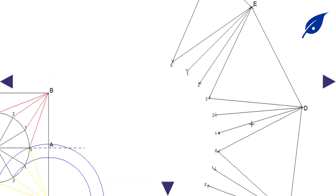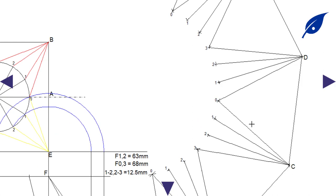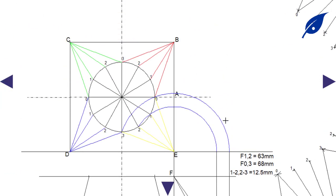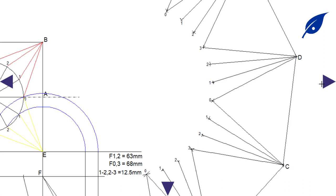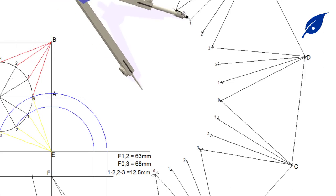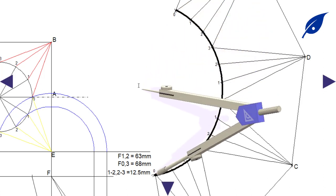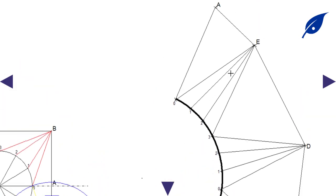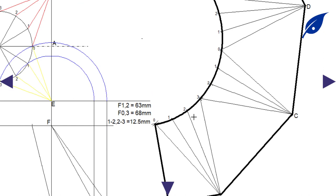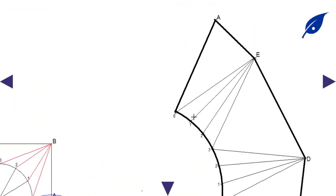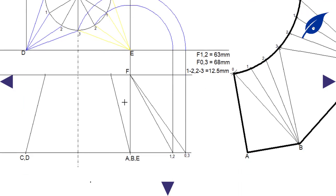We repeat the same process to get all remaining required points for the development. The last point for o at side a is obtained the same way we started. Notice that the arc obtained across the development forms a circle, so we find a midpoint and use a compass — not a French curve — to draw a very smooth arc. Here is the required development of a square-to-round top using the triangulation method. Thank you for watching this tutorial; be sure to subscribe to this channel for more videos.